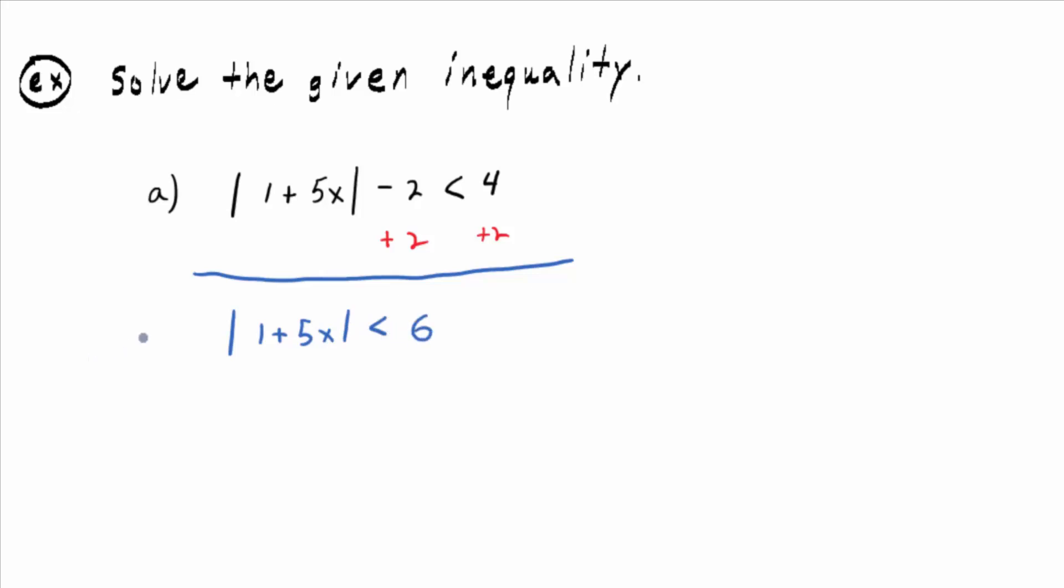Step 1. What was step 1? Solve the related equation to get your critical values. So I'm going to turn this into an equation. The absolute value of 1 plus 5x is equal to 6.